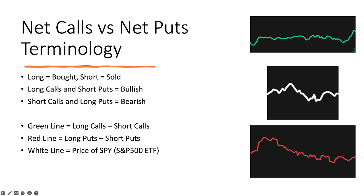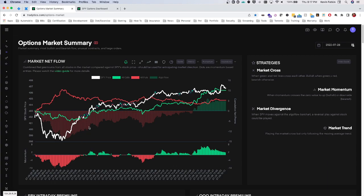Long calls and short puts — meaning bought calls and sold puts — are bullish, whereas short calls (sold calls) and long puts (bought puts) are bearish. The green line is showing us the net values of long calls minus short calls. The red line is showing us long puts minus short puts. So we're getting the net value of calls and puts based on whether they were bought or sold. The white line is the price of SPY, which is an ETF based on the S&P 500.